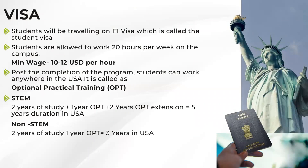Let's talk about visa and work opportunities. Students will be traveling on an F-1 visa. You can apply for the visa six months prior to your program start date. For example, if your program starts in September, you can put in your visa application six months before. In terms of actually traveling to the country, you can go one month prior to your program start date — not before that. That is one of the visa rules.